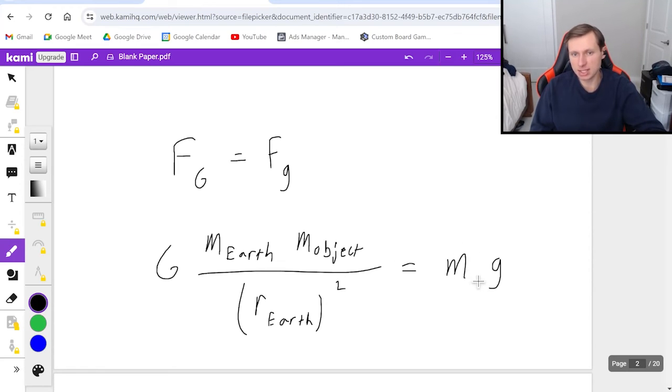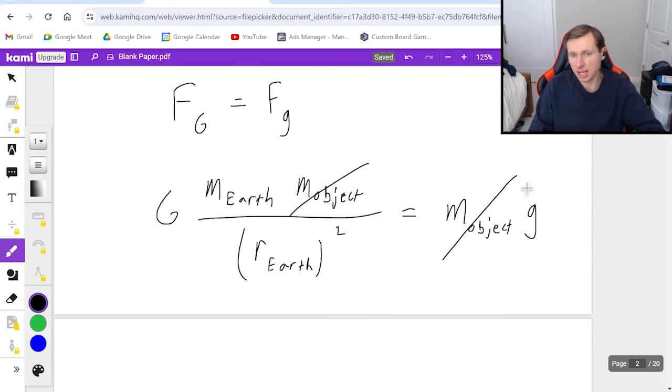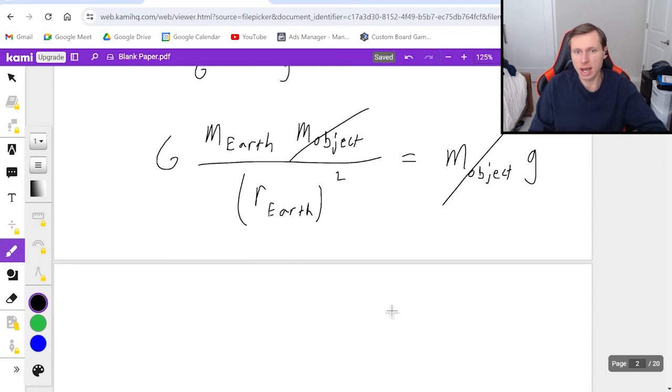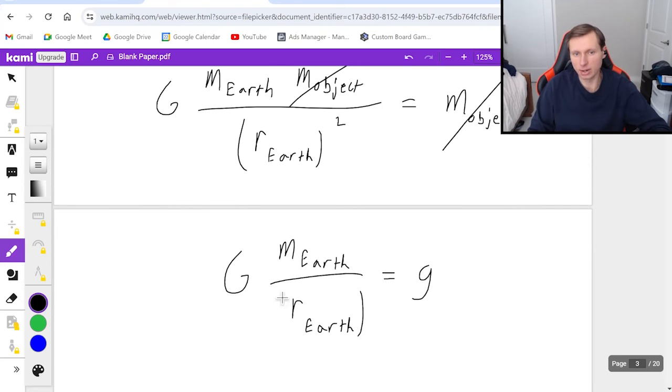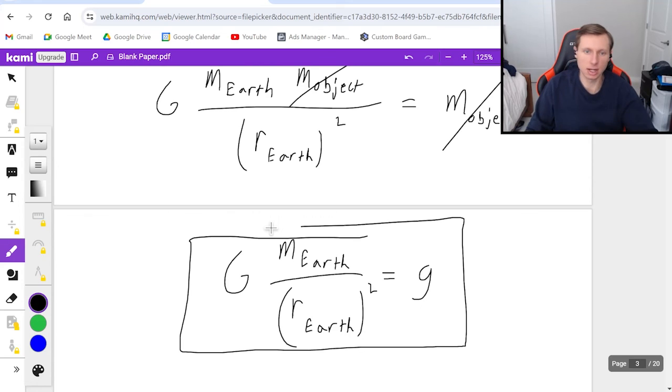Then the mass of the object cancels on both sides, and we have an actual equation for little g. It's the universal gravitation constant times the mass of the earth, and then divided by the radius of the earth squared. And that's where the equation for little g comes from.